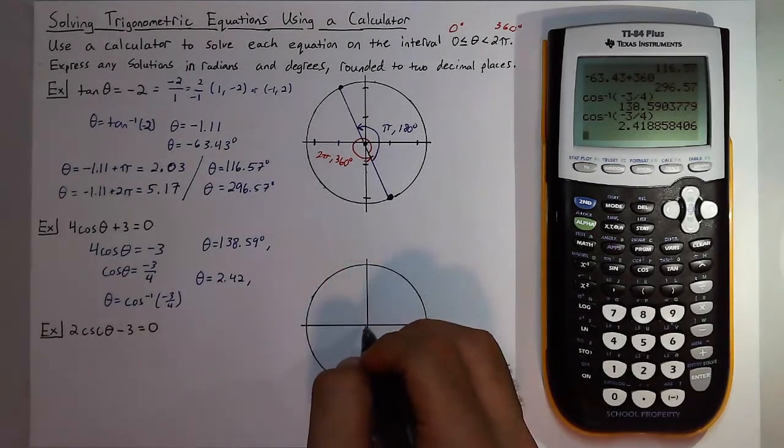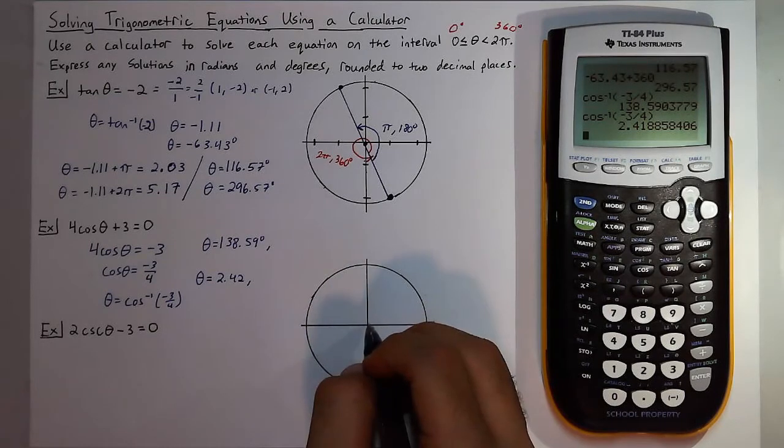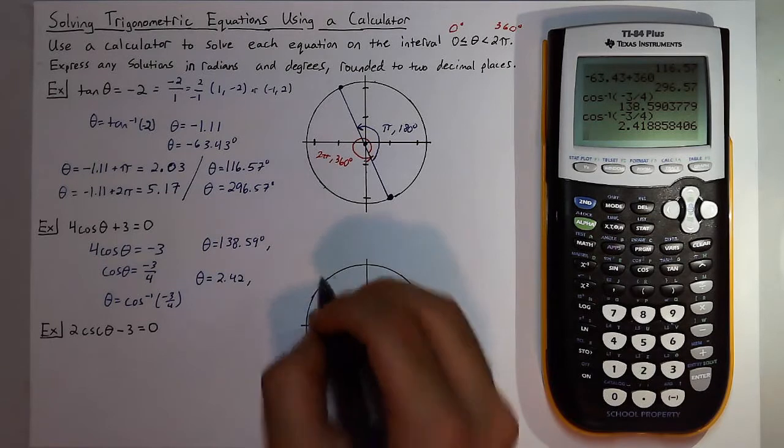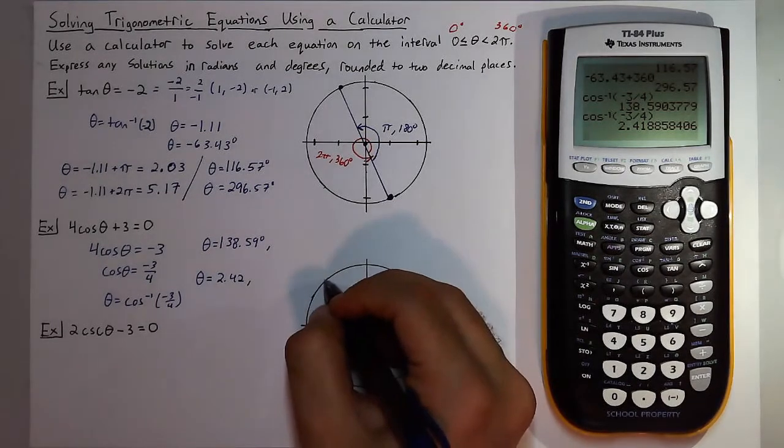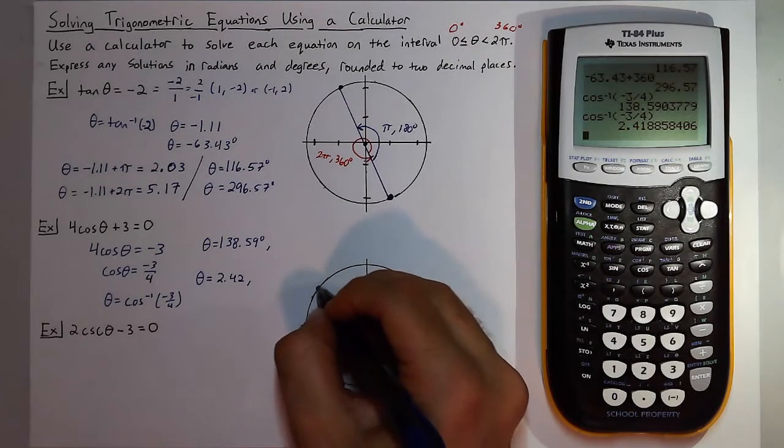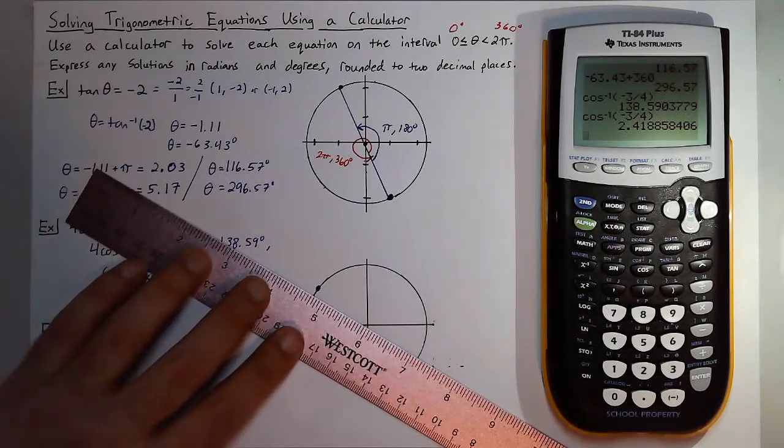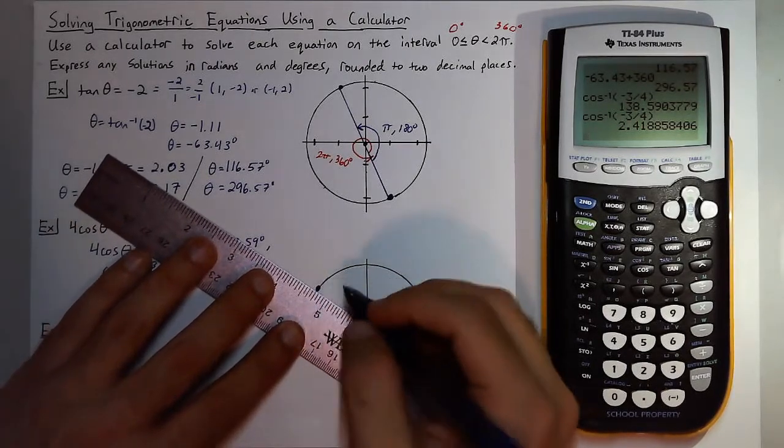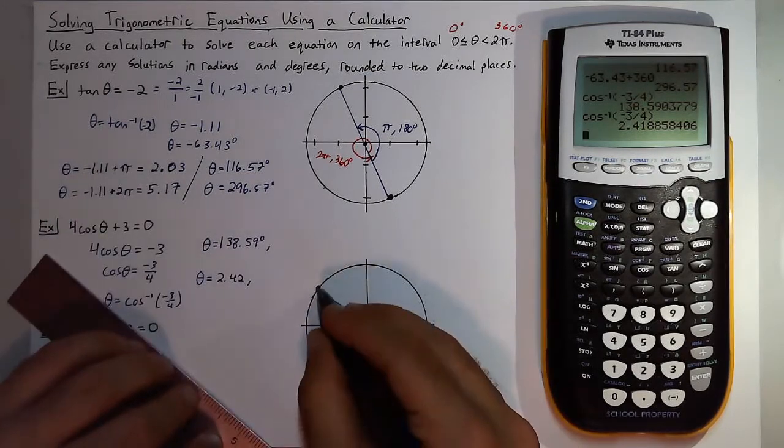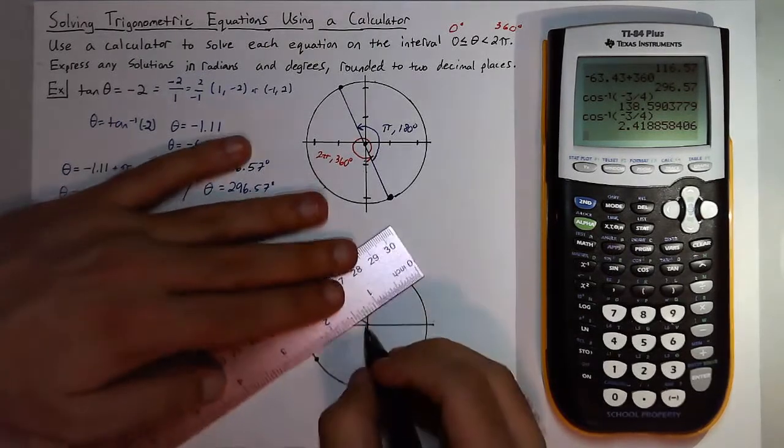So let's look at where negative 3 fourths cosine would be. That would mean we would go left 4 and then up 3, so where cosine would be negative, so about right here, more left than up.